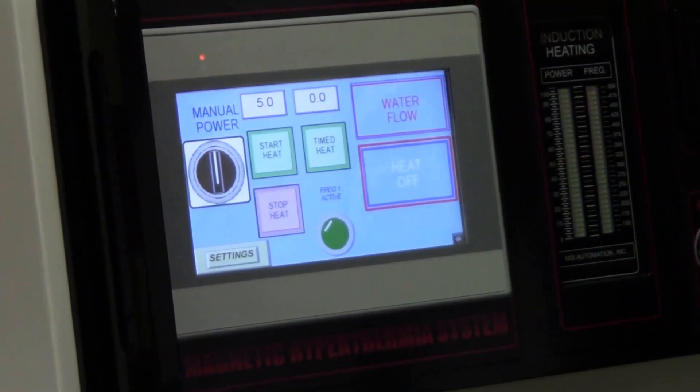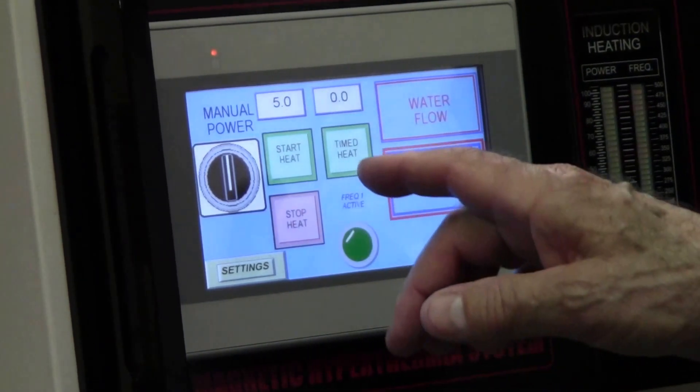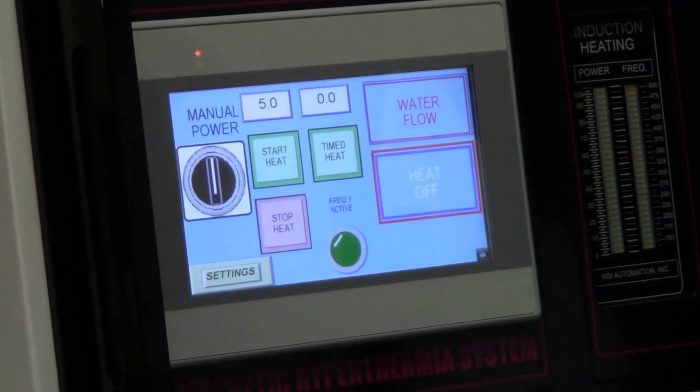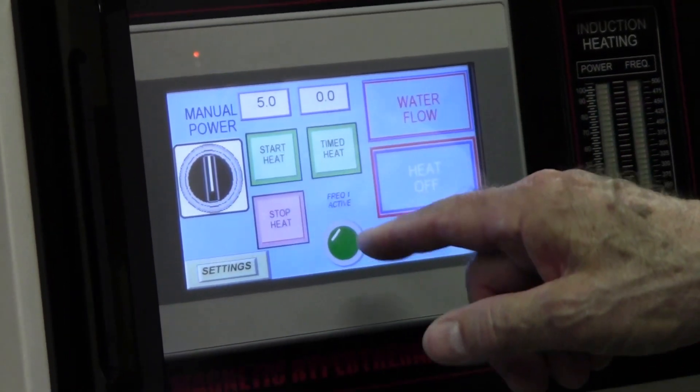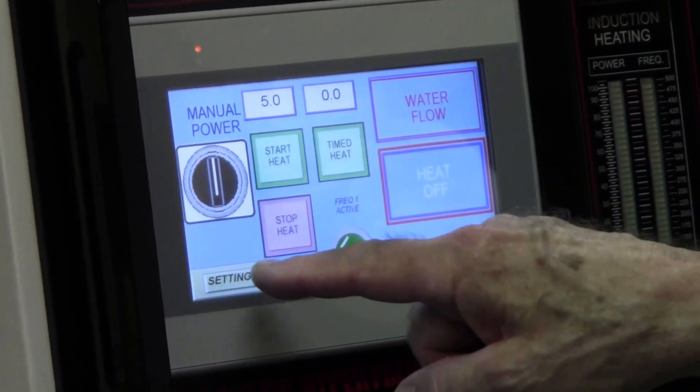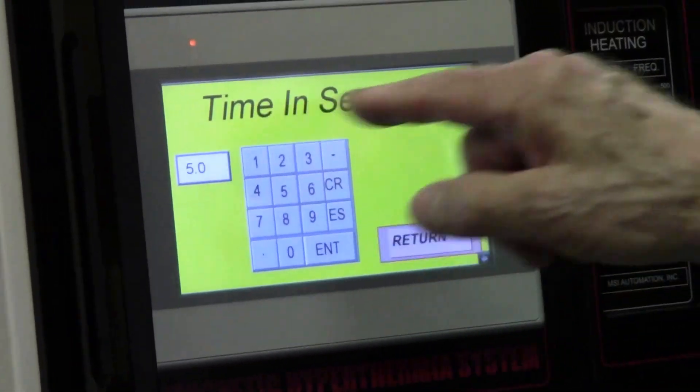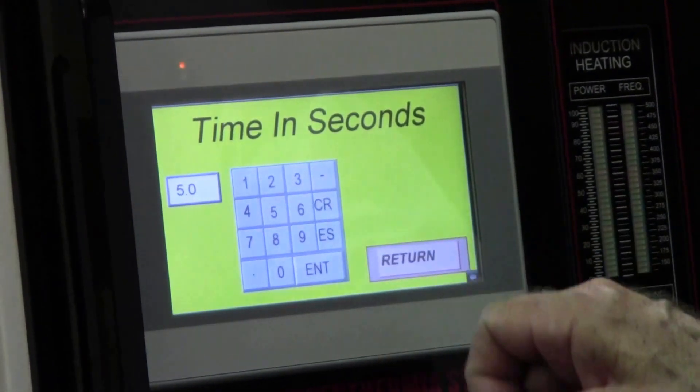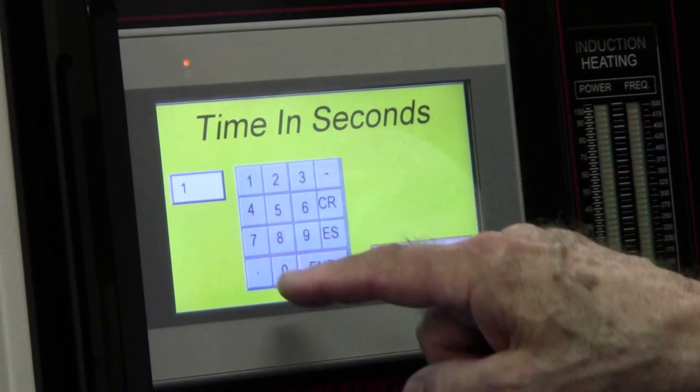So I'll push the selector switch and now we're in manual power. Now the screen itself has a built-in timer, so you can do timed heating. This is time in seconds. Right now it's set for five seconds. I'll change it to ten seconds.